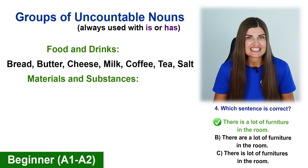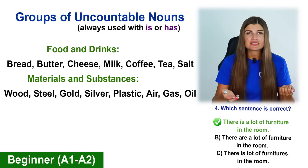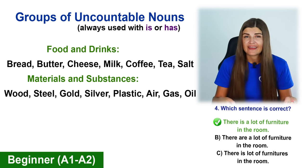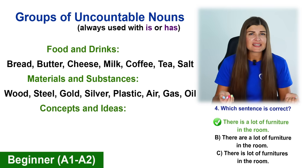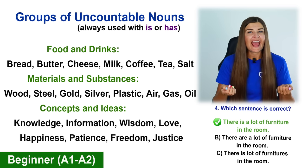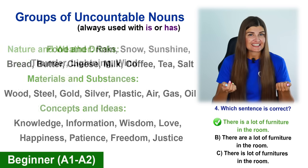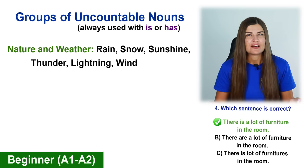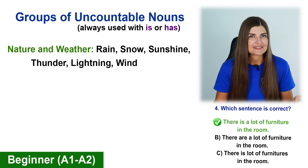Materials and substances: wood, steel, gold, silver, plastic, air, gas, oil, and so on. Concepts and ideas: knowledge, information, wisdom, love, happiness, patience, justice. Nature and weather: rain, snow, sunshine, thunder, lightning, and wind.